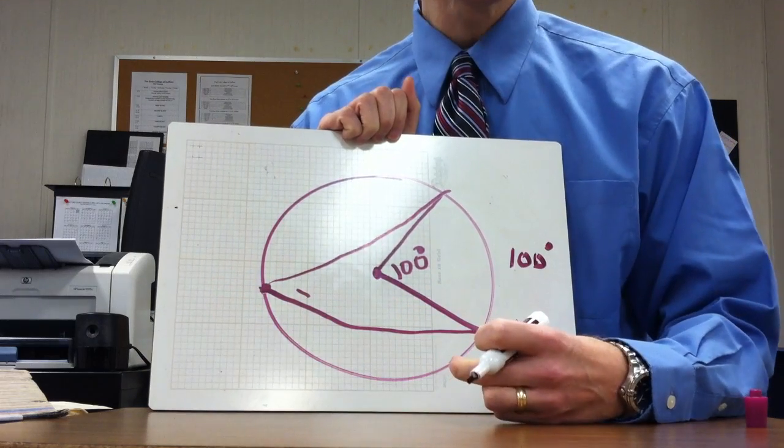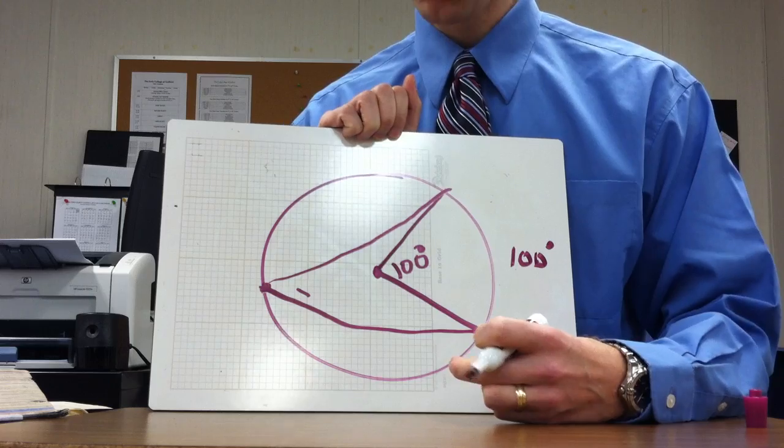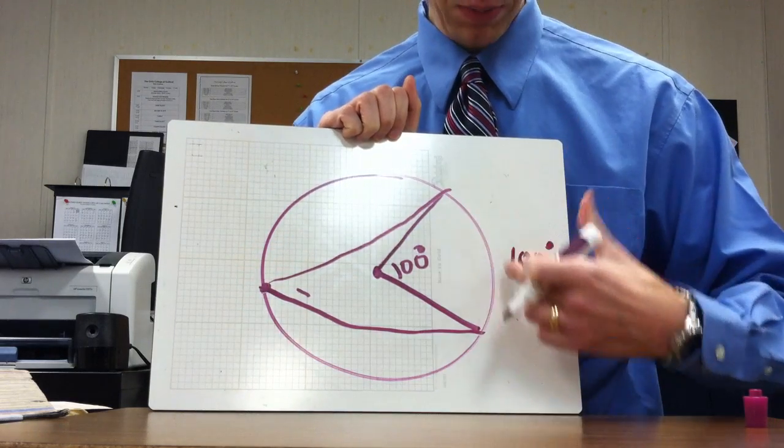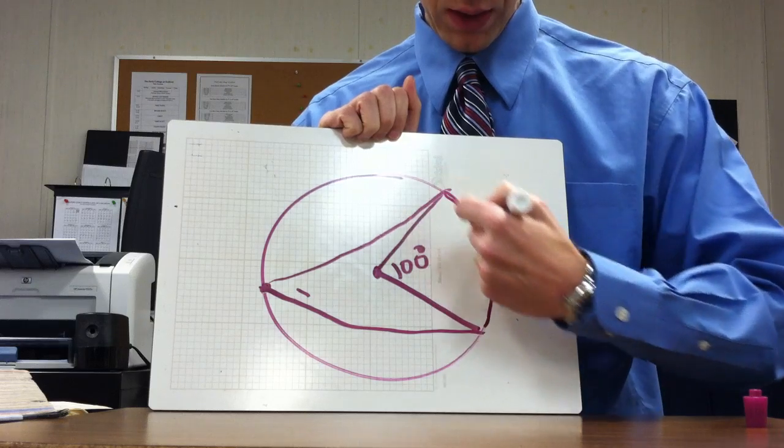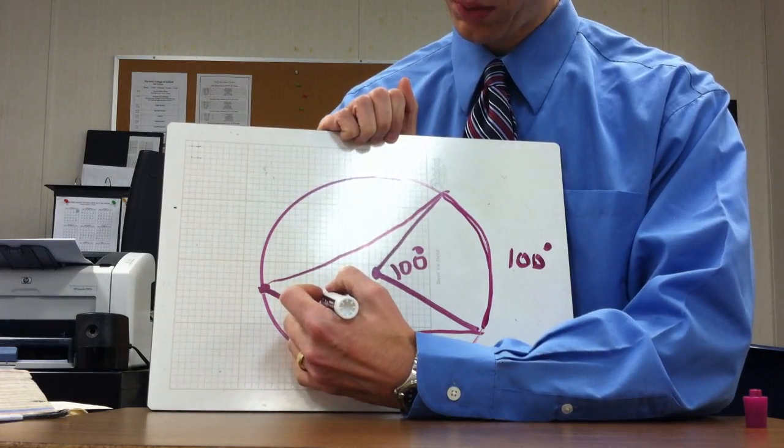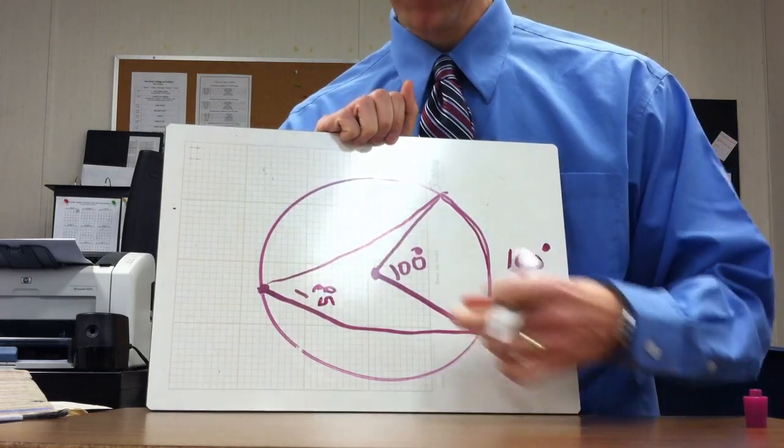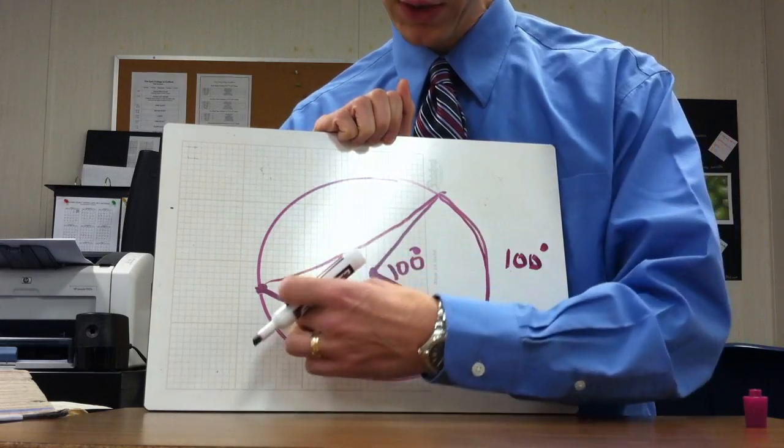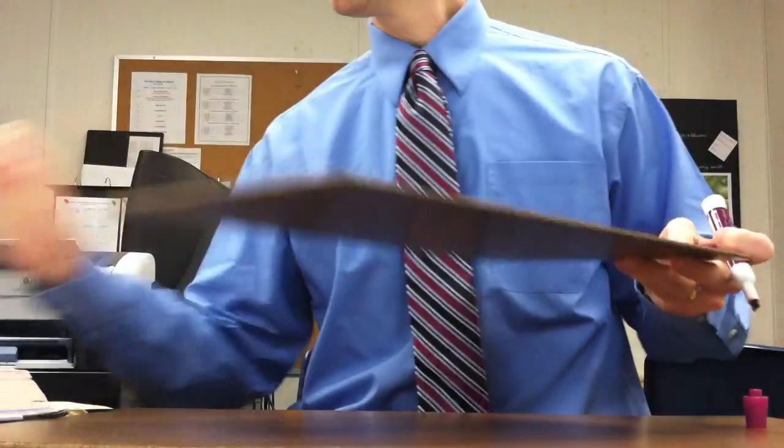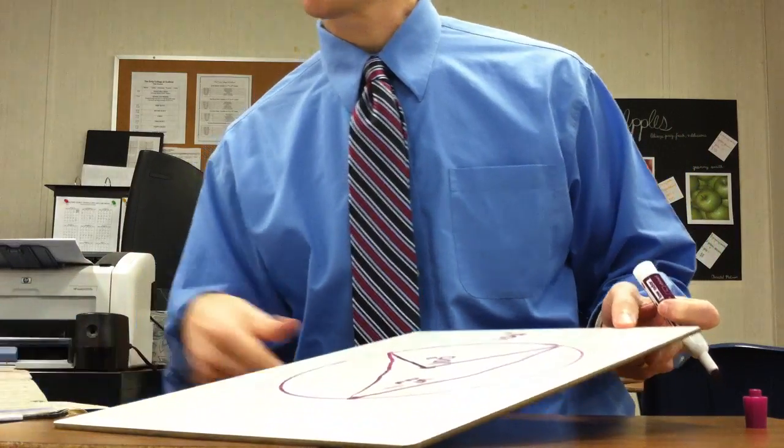And in fact, it's cut in half. So the rule is: the measurement of an inscribed angle is half the measure of its intercepted arc. So if you follow it out and this is 100 degrees, then the measurement of angle one would have to be 50 degrees. So pretty easy—central angle is the same, inscribed angle is half of the intercepted arc.